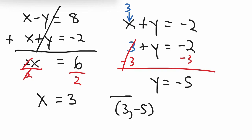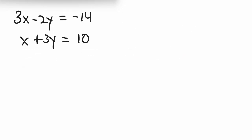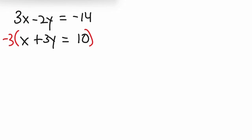So our solution is x equals 3 and y equals negative 5 — that's your answer as a point. Here's our next problem. What variable would be best to eliminate — x or y? As it turns out, x would be the easiest to eliminate because you only need to multiply one of the equations by a number. We can multiply the second equation by negative 3.